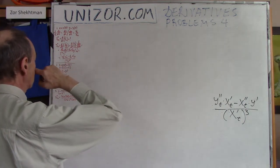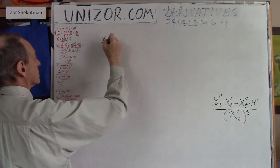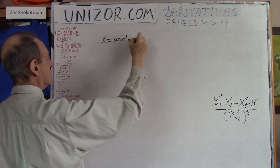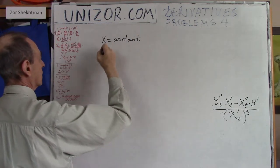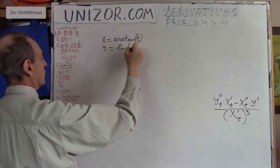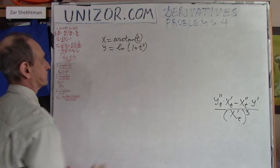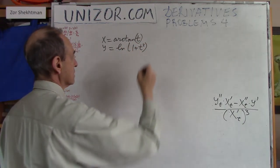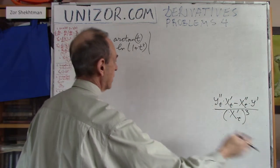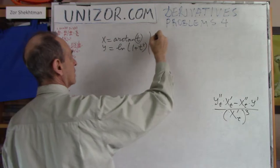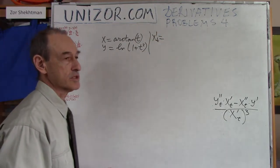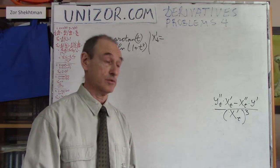Example number one: x = arctan(t) and y = ln(1 + t²). We need the first and second derivatives of both x and y with respect to t.